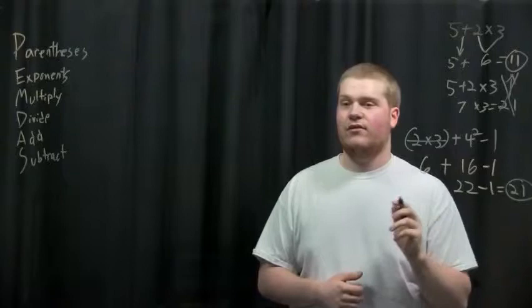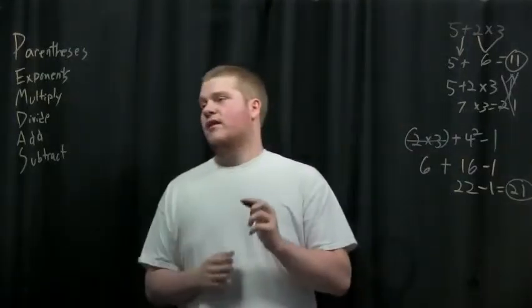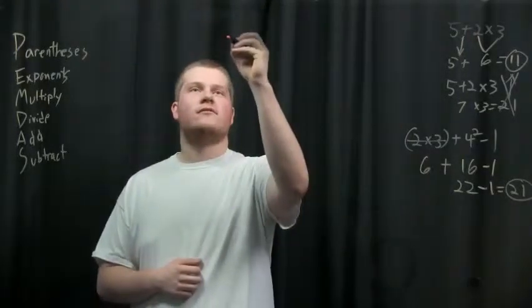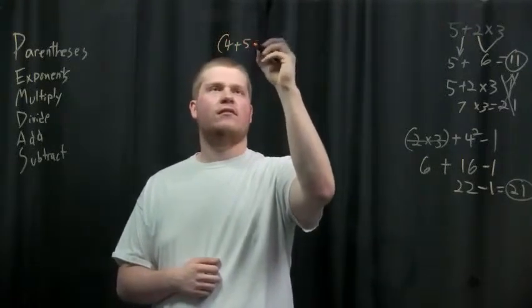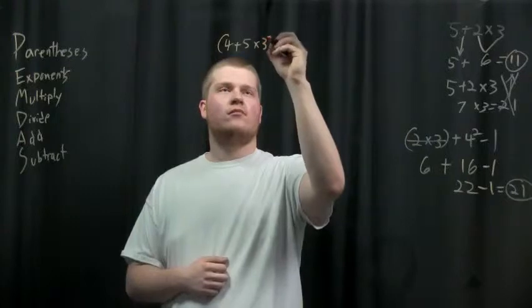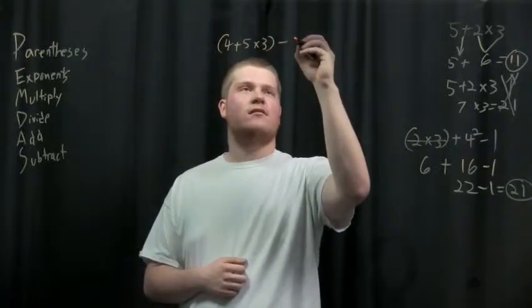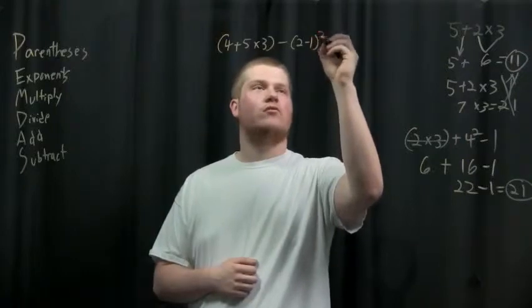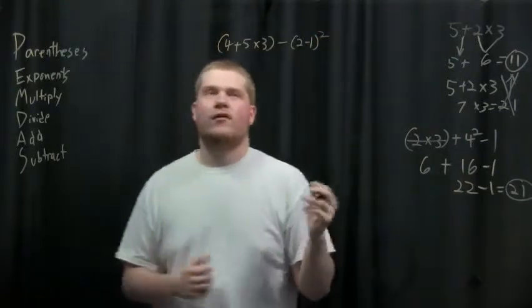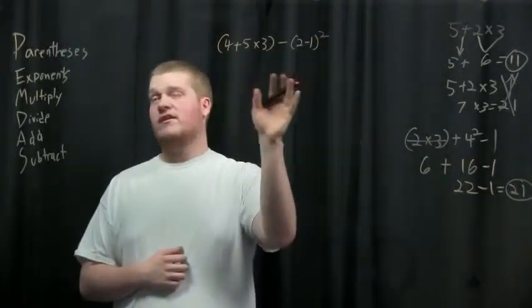So now let's do one last one. Let's do a doozy. We're gonna do (4 + 5 × 3) - (2 - 1)². So how are we gonna do this one? First you do everything inside the parentheses.